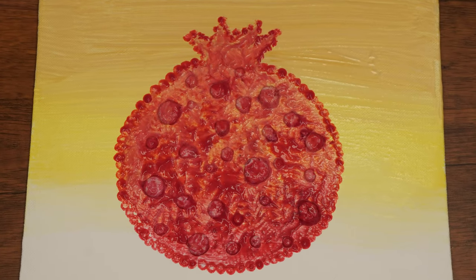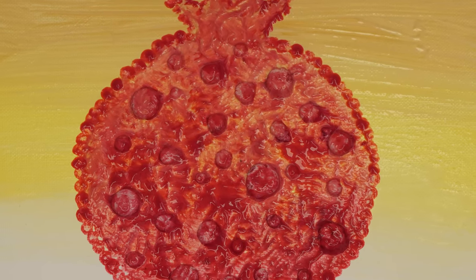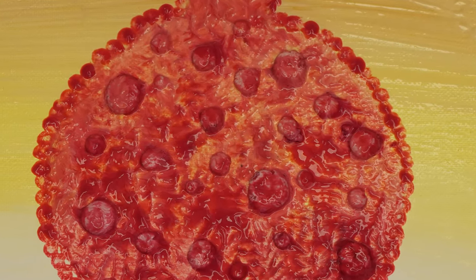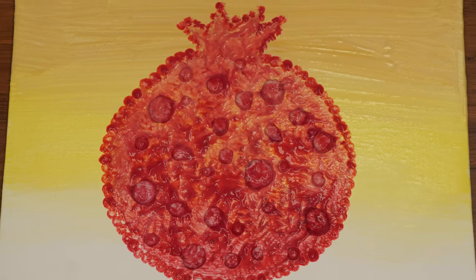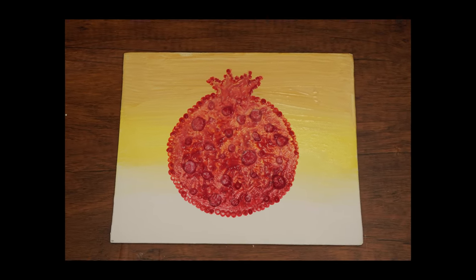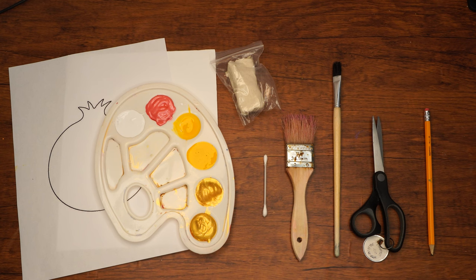Hi boys and girls, welcome back to the Parshah Studio. In Parshah Shlach we learned the story of the twelve spies who were sent to check out the land of Israel. They brought back huge fruits including a giant pomegranate, and that's why we are going to make a pomegranate painting today.